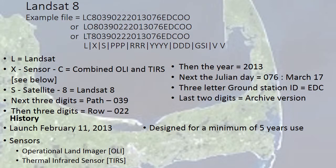Landsat 8 is the current satellite up there, collecting information and sending it down. This image shows Cape Cod. You can see that it combines two different sensors: the OLI sensor — the Operational Land Imager — and the TIRS sensor, the Thermal Infrared Sensor. It is collecting information and transmitting it down. Again designed for five years of use, but if the design specs hold out, we're going to have it last for quite a number of years.